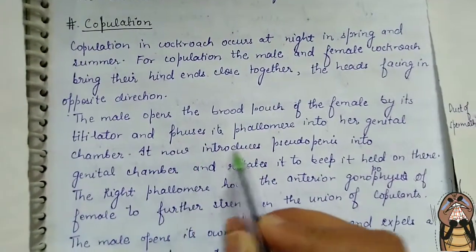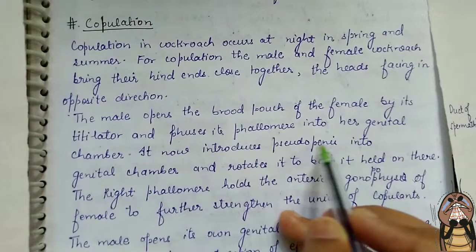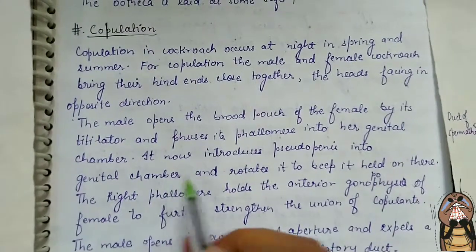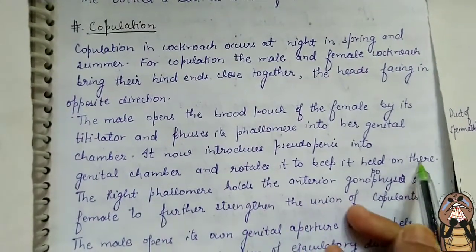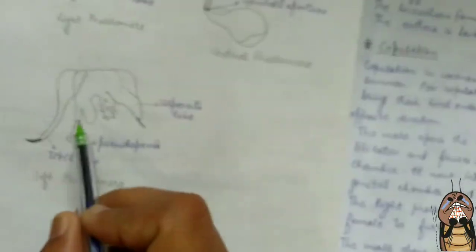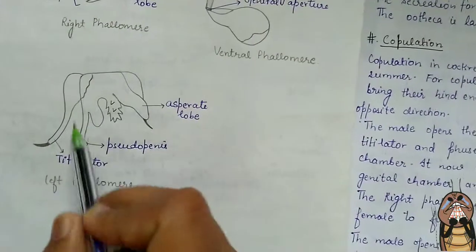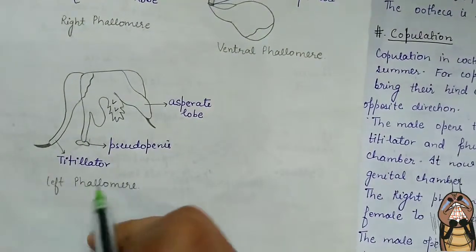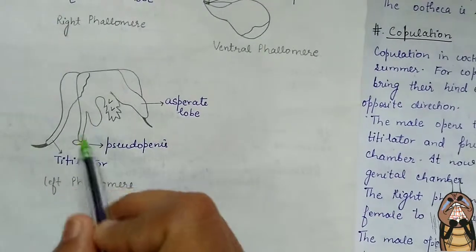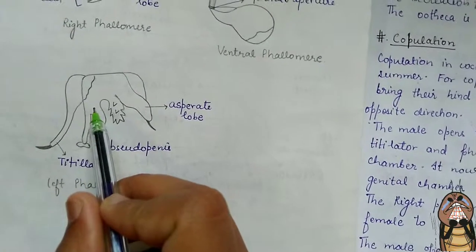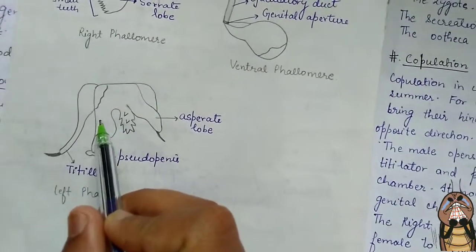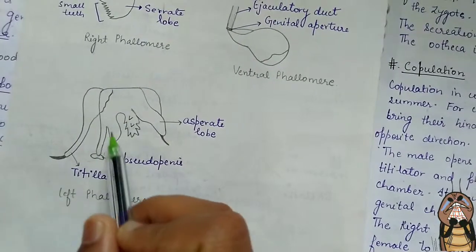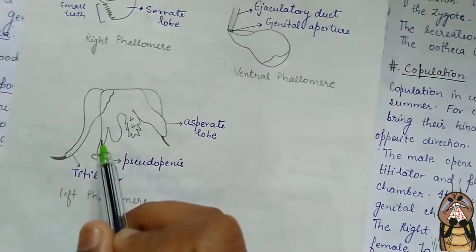It now introduces the pseudopenace into the genital chamber and rotates it to keep it held on there. The pseudopenace is introduced in the genital chamber via the left phallomere structure, and it is rotated to maintain hold.